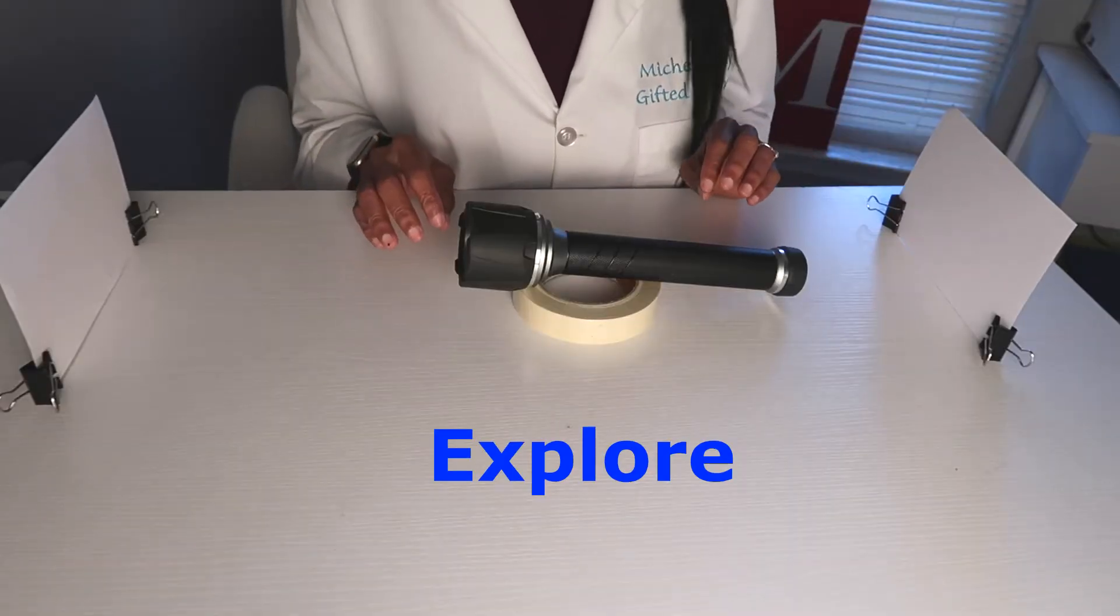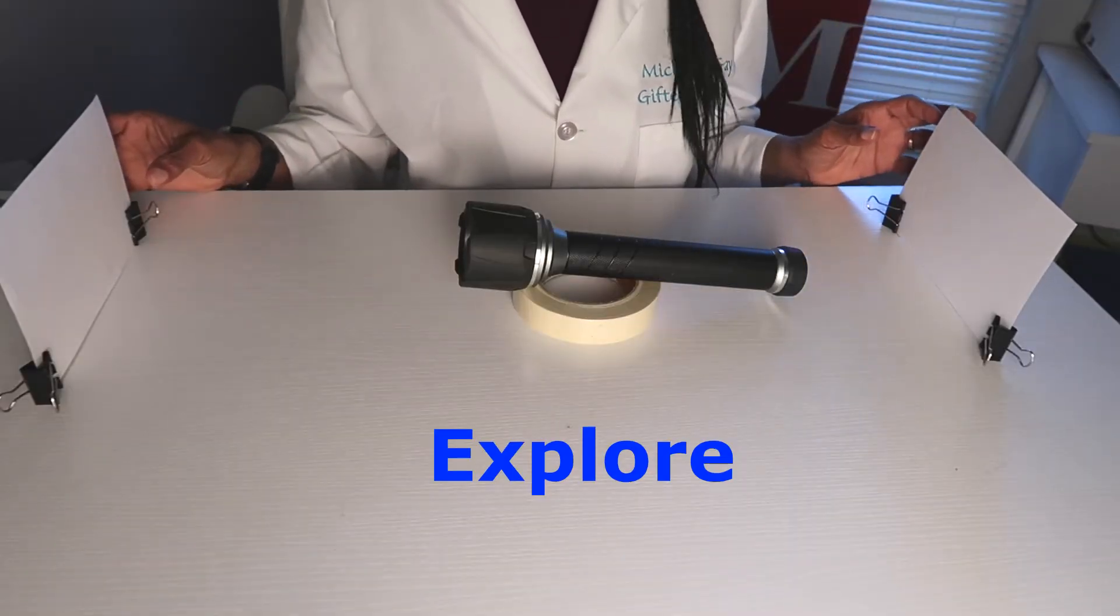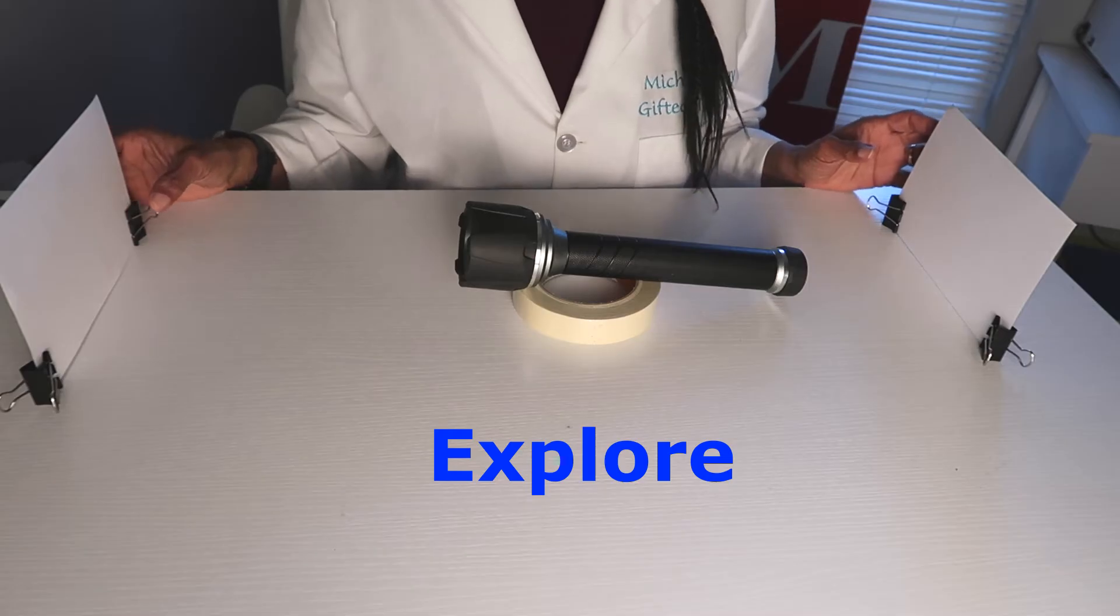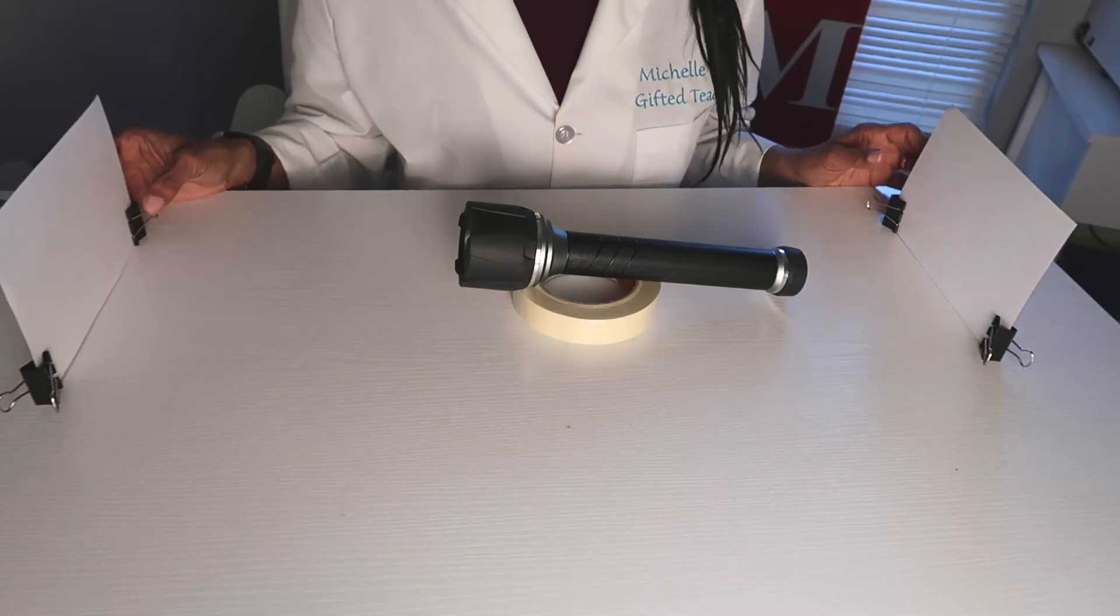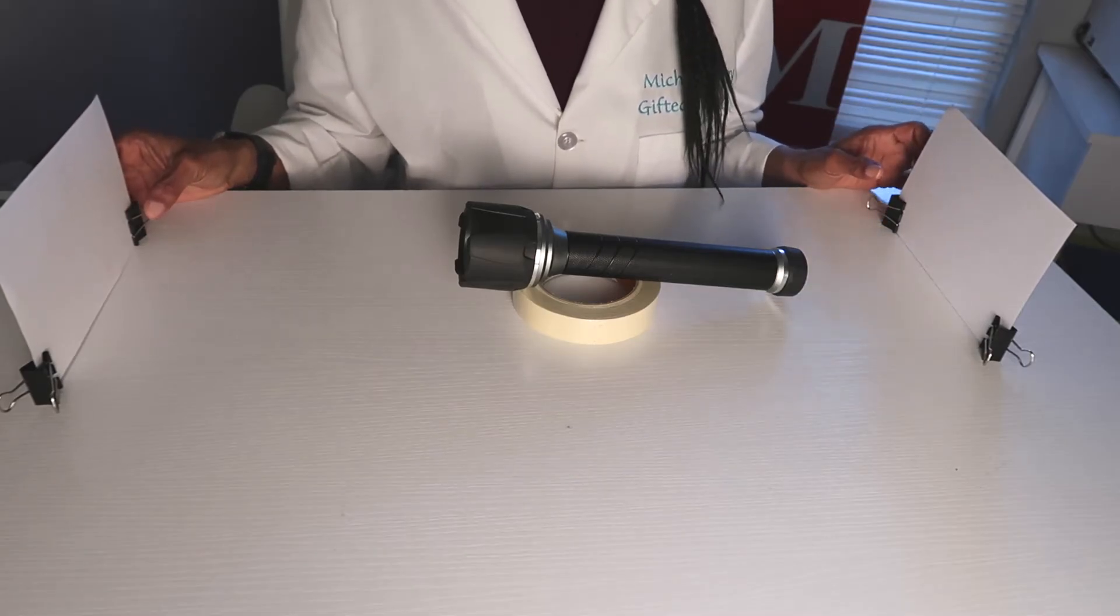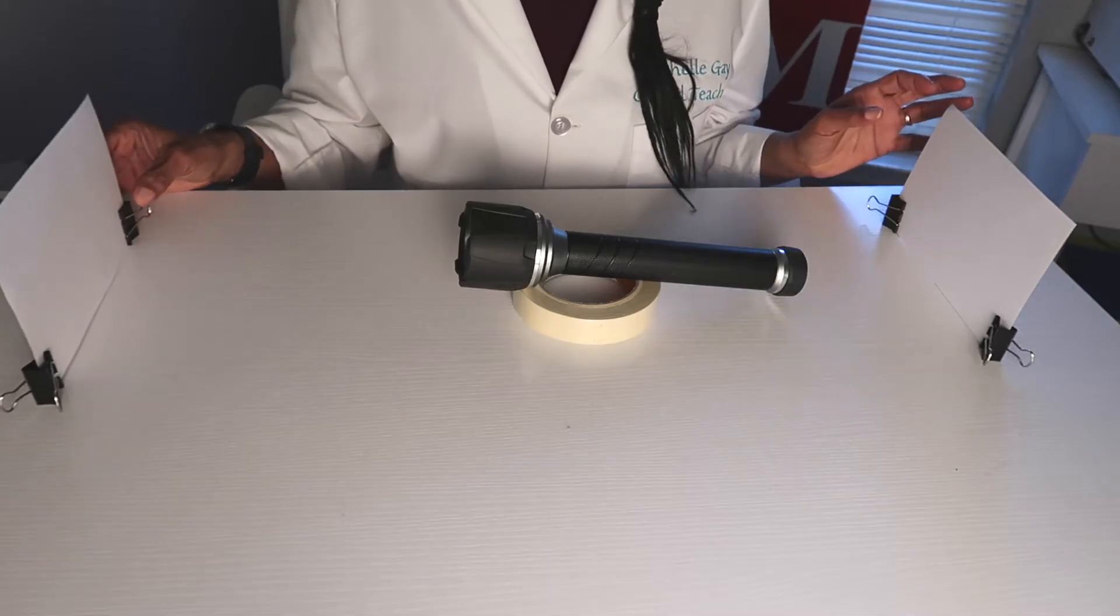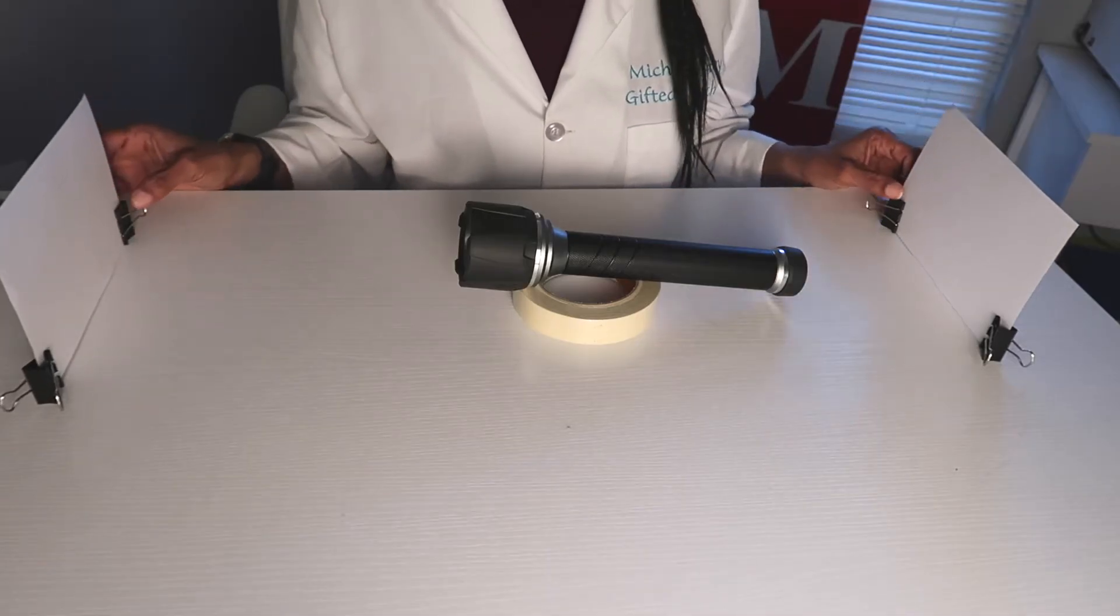We're going to look at different materials to determine which property we are seeing. I have set up a display that we're going to use to determine if light is being transmitted, if light is being absorbed, and if light is being reflected.